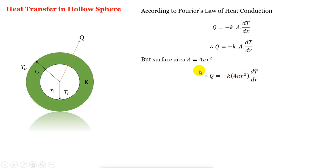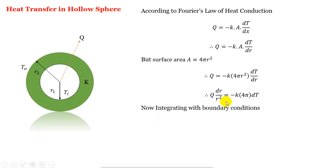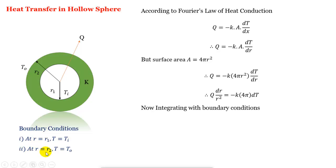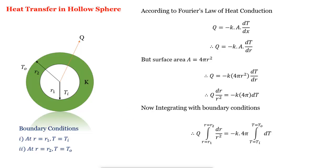Now dr and r² move to the left-hand side, giving Q·dr/r² equal to minus K·4π·dT. Integrating with boundary conditions: at R equal to R1, T equal to Ti, and at R equal to R2, T equal to To. Integrating Q·dr/r² from R1 to R2 equals minus K·4π·integral of dT from Ti to To. The integration of 1/r² is minus 1/r, with limits R1 to R2, equal to minus K·4π·(To minus Ti).